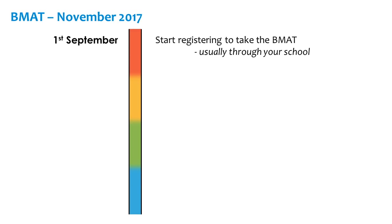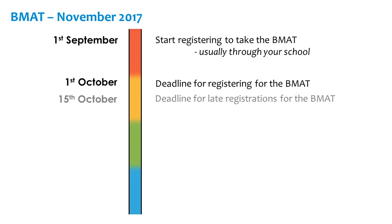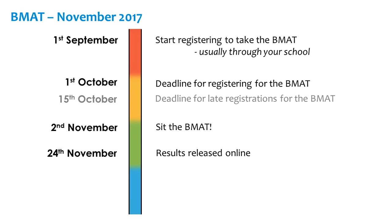Now let's have a look at some key dates. These dates are for the usual November sitting of the BMAT and are correct for the 2017 BMAT, so make sure you double check these if you're taking it in a different application cycle. On the 1st of September, you can start to register for the BMAT. This will usually be done through your school, and it is vitally important that you register yourself, as your school cannot register for you, and your university application is very likely to be rejected if you don't sit the BMAT. The deadline for registration is the 1st of October, although late registrations will be accepted until the 15th of October. You must take the BMAT in the same year that you apply, and results are only valid for that application cycle. On the 2nd of November, you sit the BMAT, probably at your school. Then on the 24th of November, BMAT results will be released and sent directly to the universities you apply to which require the BMAT.